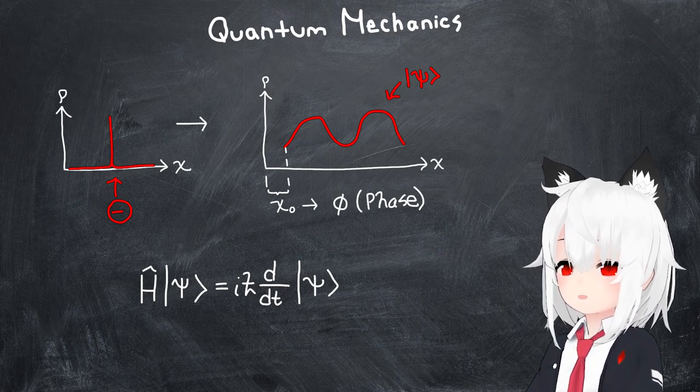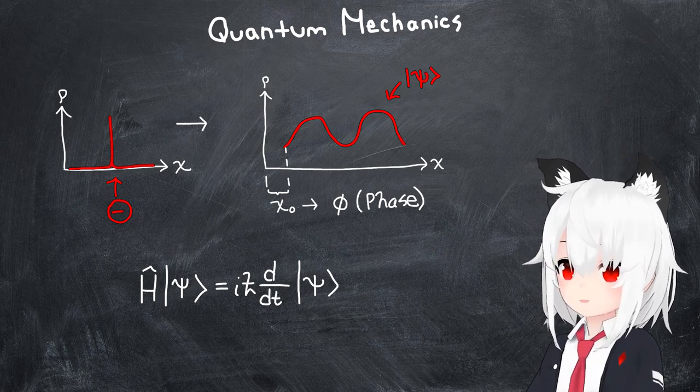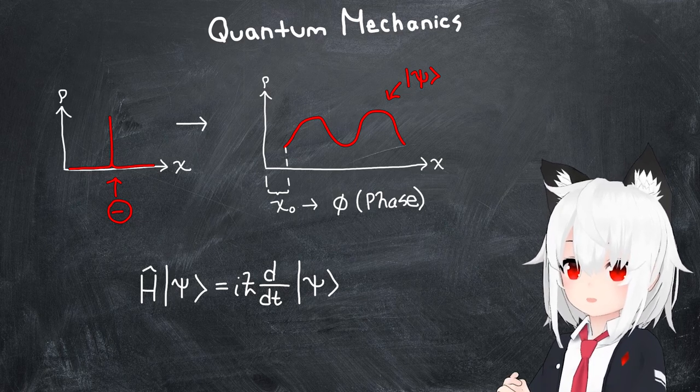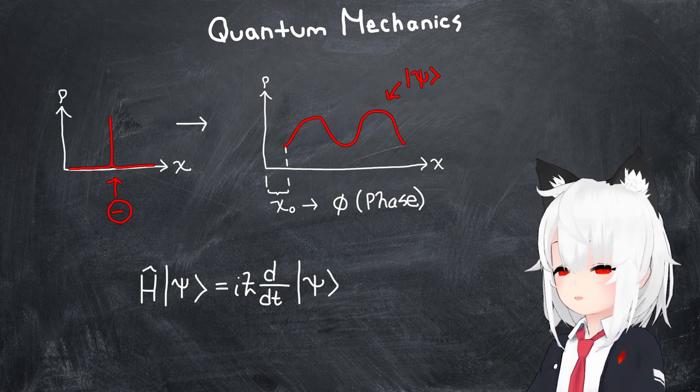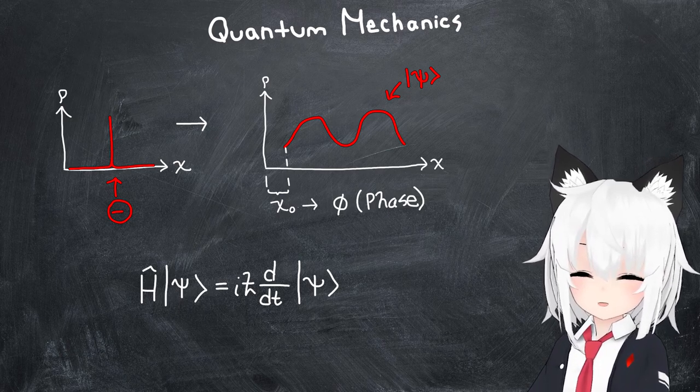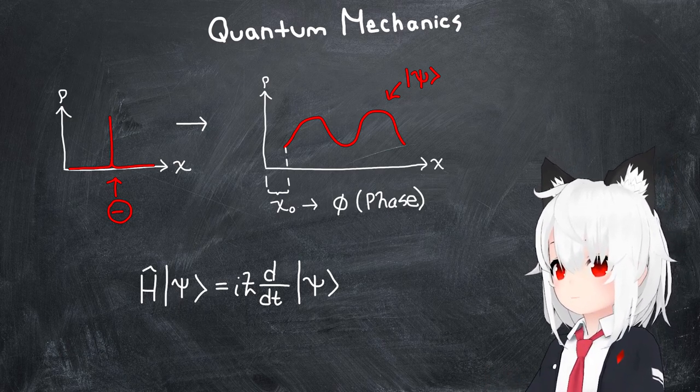Fundamentally, this is just an equation which makes the assertion that the energy operator of the system is the generator of time translations on the wave function. And if we wanted to solve it, we'd first need to know what parameters this energy operator depends on.